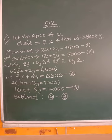Good morning grade 9. We are doing 6 questions from 5.2. The question is: the price of 3 chairs and 2 tables is 4,500 and the price of 5 chairs and 3 tables is 7,000. Find the price of 2 chairs and 2 tables.